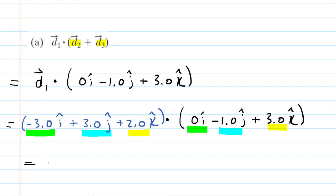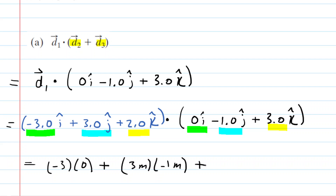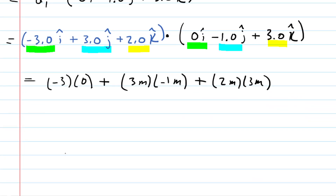For the x components, we would have negative 3 multiplied by 0. Then we add the product of the y components: 3 meters multiplied by negative 1 meter. And then we add the product of the z components: 2 meters multiplied by 3 meters. The first term cancels out, giving us negative 3 meters squared, and then adding 6 meters squared, which simplifies to positive 3 meters squared.